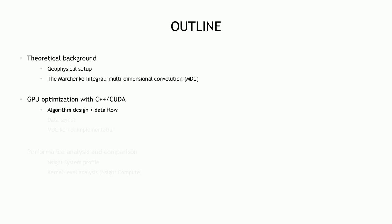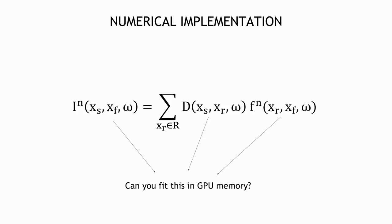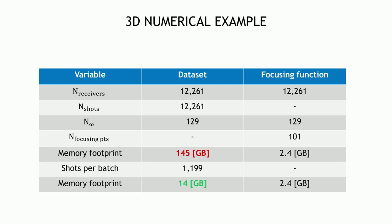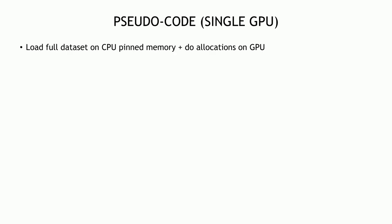Before applying the algorithm on a computer, you want to make sure everything fits in memory. For the 3D dataset example we used — 12,000 shots, 12,000 receivers, 129 frequencies, and 100 focusing points — the memory footprint was too large, so we divided the full set of shots into many batches such that each batch fits in GPU memory.